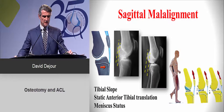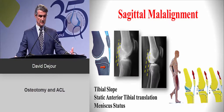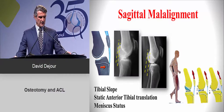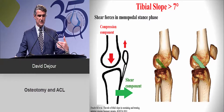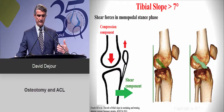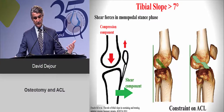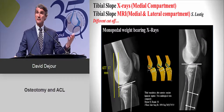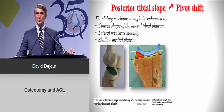Regarding sagittal alignment, you must measure the tibial slope, the static anterior tibial translation — which represents stress on your graft — and assess the meniscus status. When walking, there are shear forces in monopodal stance that increase tension in the ACL and in your graft. Measure this on X-rays and also on MRI.